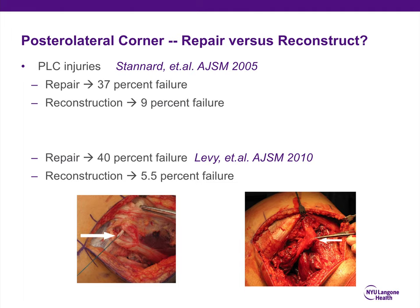In terms of repairing versus reconstructing posterolateral corners, studies by Stannard and Levy show that repairs have a significantly higher failure rate — anywhere from 35% to 40% — whereas reconstructions fail much less, anywhere from 5% to 10%.